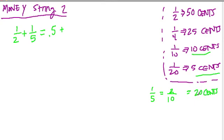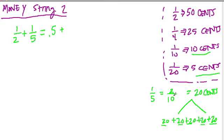Why is 20 cents equal to one fifth? Because how many groups of 20 cents go into a dollar? Five of them — 20 + 20 + 20 + 20 + 20 = one dollar. So each group of 20 cents is one fifth of a dollar. You can also reduce: divide two by two and ten by two to get one out of five. Two ways to think about it.